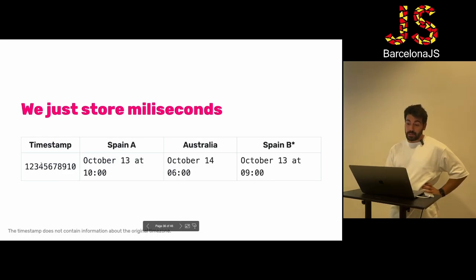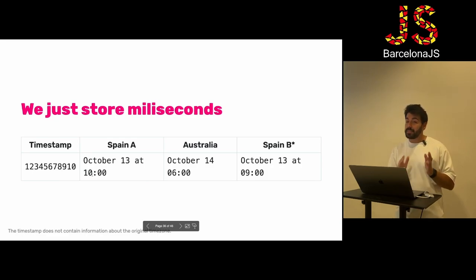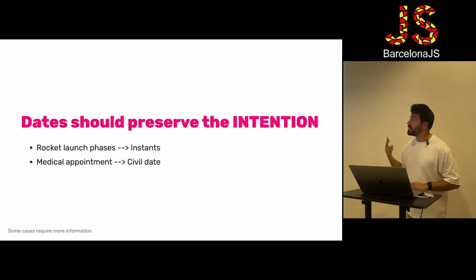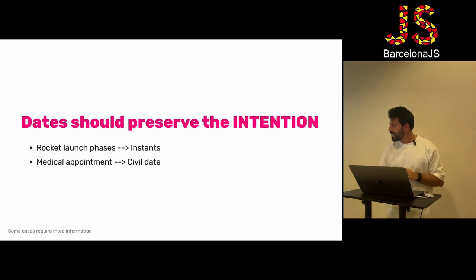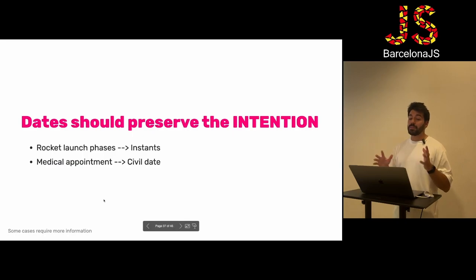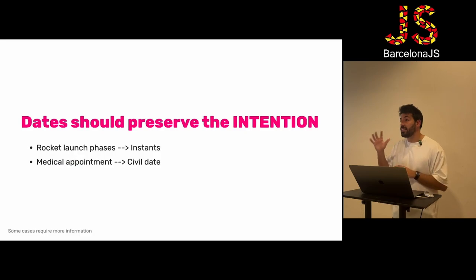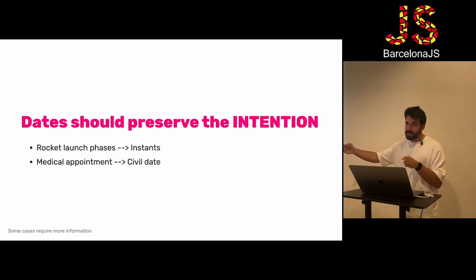With JavaScript dates, we just store milliseconds, and depending on the timezone where you're reading those milliseconds, you'll get something different. Sometimes that's right, but sometimes it's totally wrong. Dates should preserve the intention. For a rocket launch, you care about instants — you don't care if politicians change the meaning of hours or skip daylight saving time. You need to rely on 'this happens 30 seconds later.' But when a medical appointment happens, you're talking about civil dates.